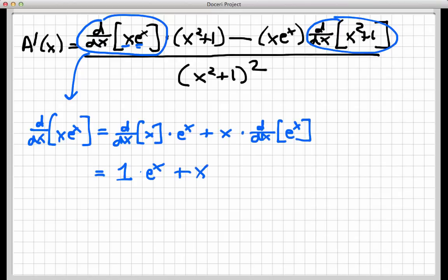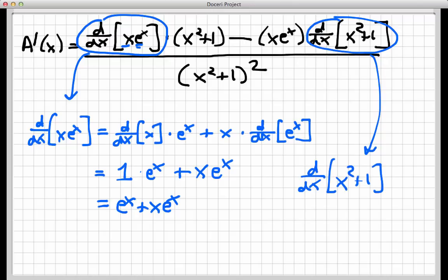And the derivative of e to the x is itself. So that first little bubble that I pointed to is just e to the x, plus x e to the x. The second one here is much simpler. This is just a polynomial function, and its derivative, the derivative of x squared plus 1 is just 2x.